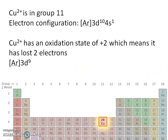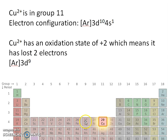We are going to look at Jahn-Teller distortion using copper two plus as an example. When you look at the periodic table, you start counting from the left hand side — hydrogen is group one, beryllium group two — counting from left to right: one, two, three, four, five, six, seven, eight, nine, ten, eleven. So copper is in group eleven.